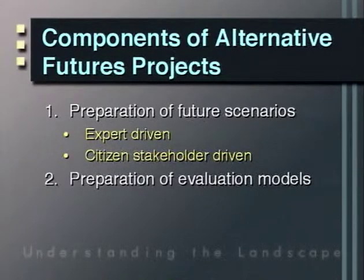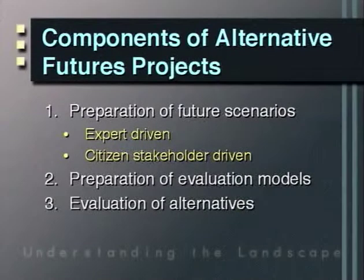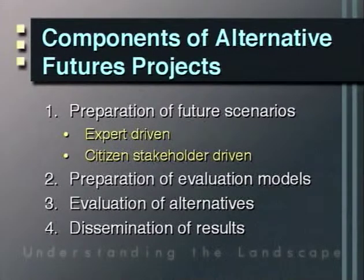The second component has to do with the choice and preparation of evaluation models — what people believe are important enough about the natural and cultural processes in a study area to compare and contrast differences among the alternative futures. Prototypical examples include the dollar value of conservation and commodity resources, effects on terrestrial and aquatic biodiversity, and in the western United States, effects on water use. The third component involves using these evaluation models to evaluate the alternative futures. And the fourth, of particular importance, is the dissemination of results — deciding who the relevant audiences are and what formats are appropriate for each.